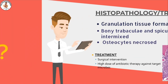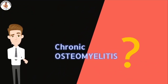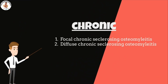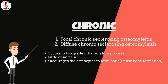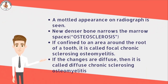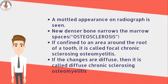Chronic osteomyelitis has two types: focal chronic sclerosing osteomyelitis and diffuse chronic sclerosing osteomyelitis. It occurs as a response to a low-grade inflammatory process with little or no pain. The stimulus is usually so mild that it encourages osteocytes to form bone, resulting in dense bone formation. The dense bone gives a mottled appearance on the radiograph, giving it an opaque look. The new denser bone narrows the marrow spaces, a process known as osteosclerosis.